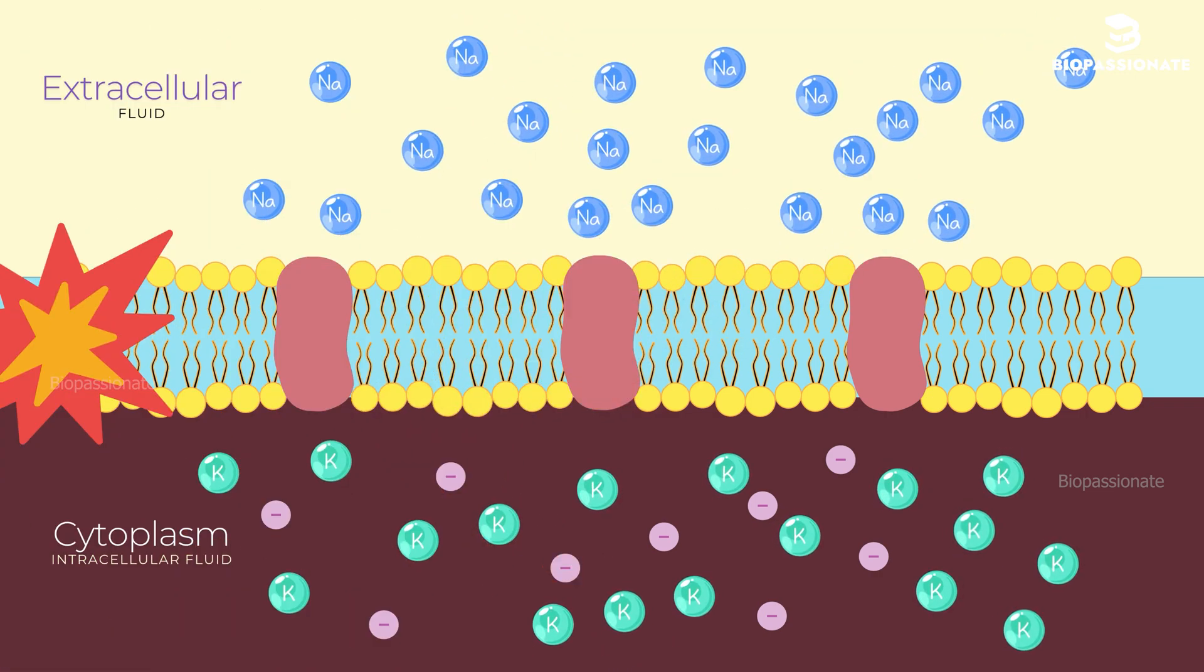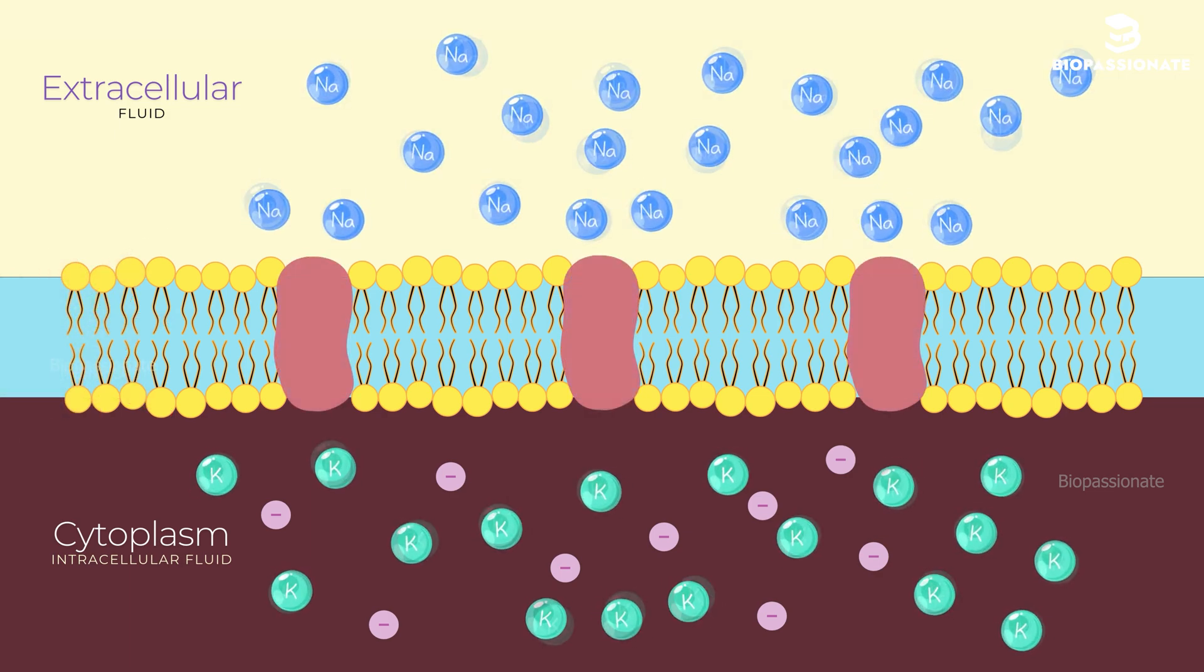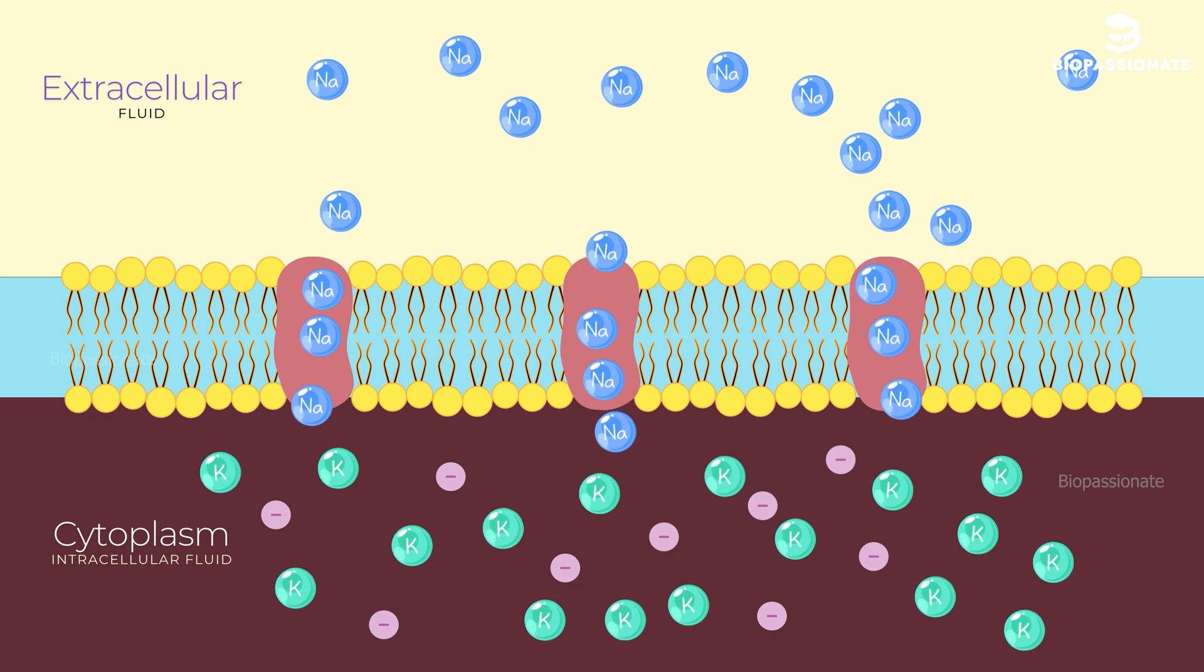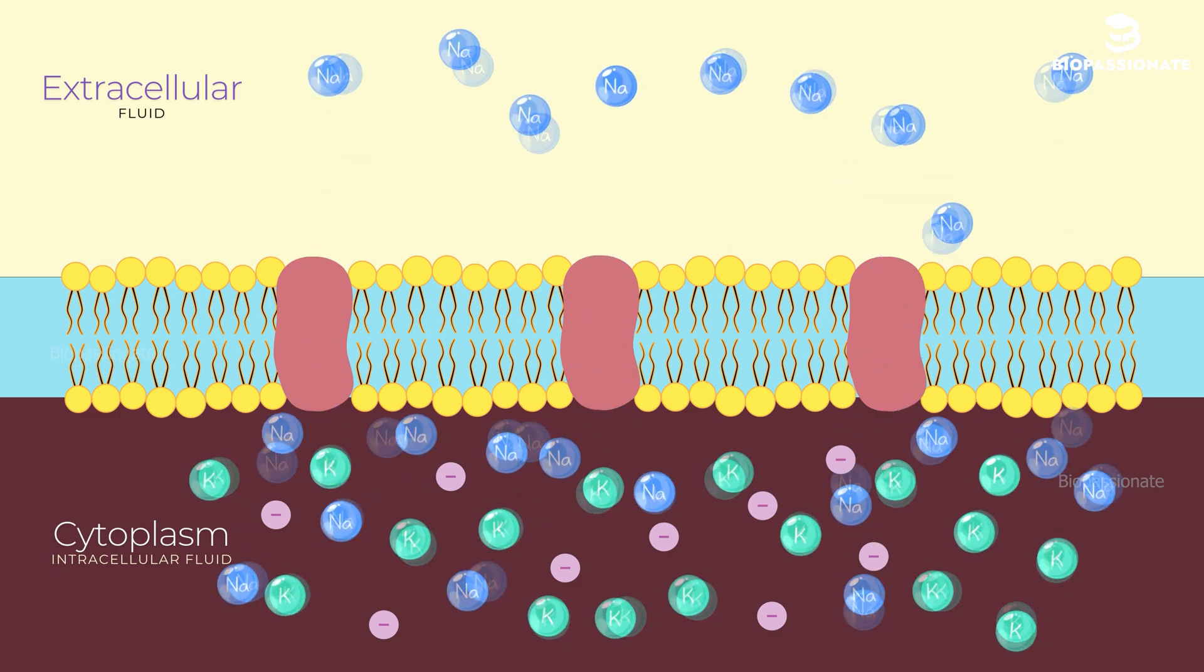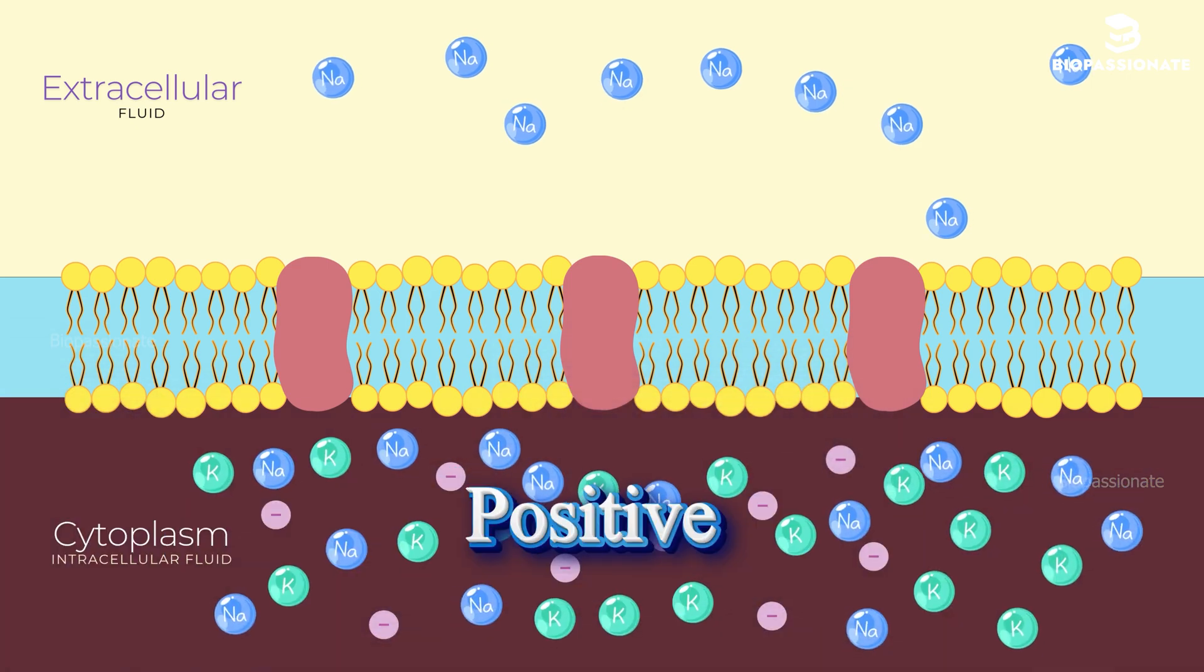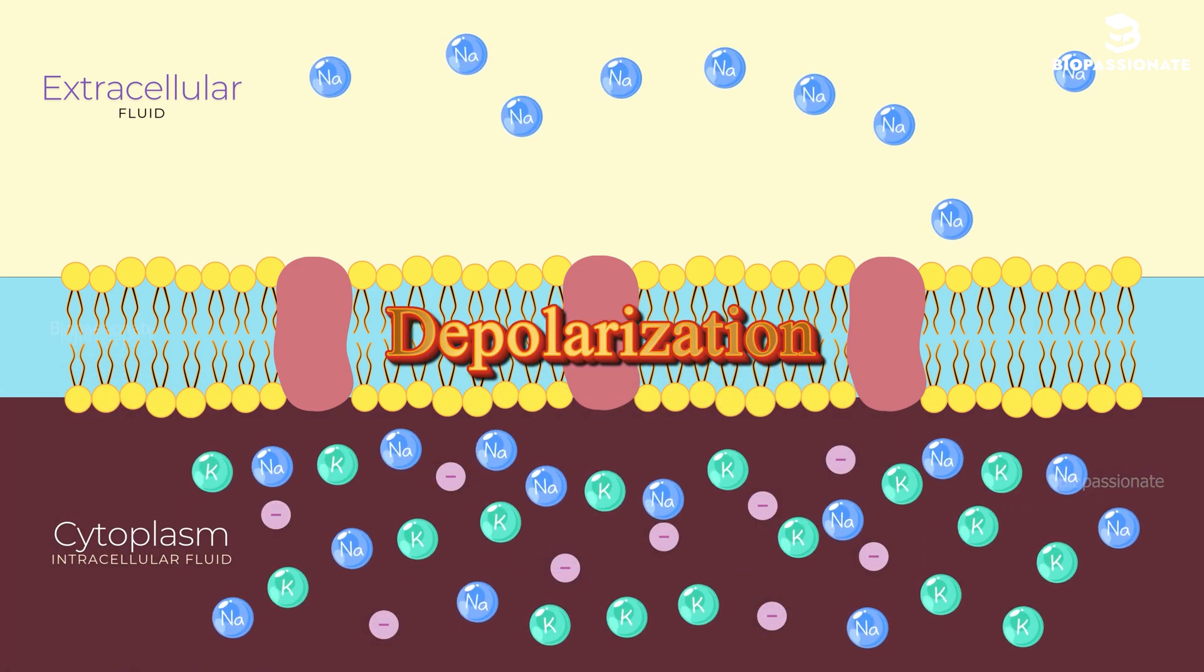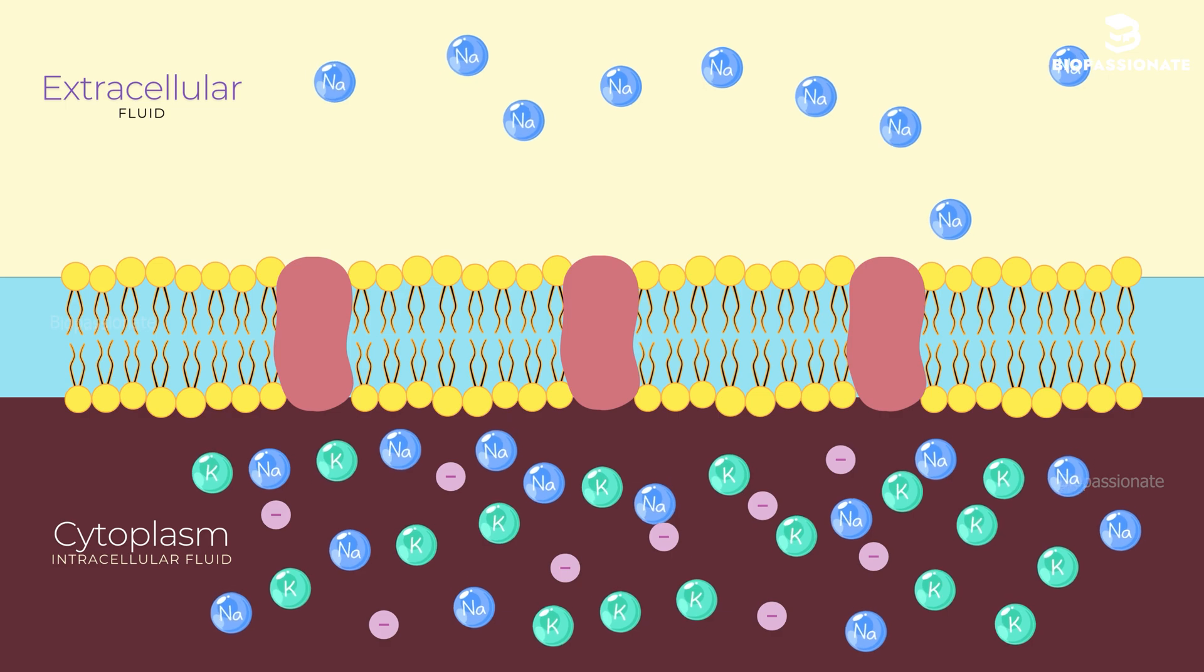But when the neuron gets a strong enough stimulus, something incredible happens. Sodium channels open up and sodium ions rush into the neuron. This causes the inside of the cell to become positively charged. This shift is called depolarization, and it creates the nerve impulse, or action potential.